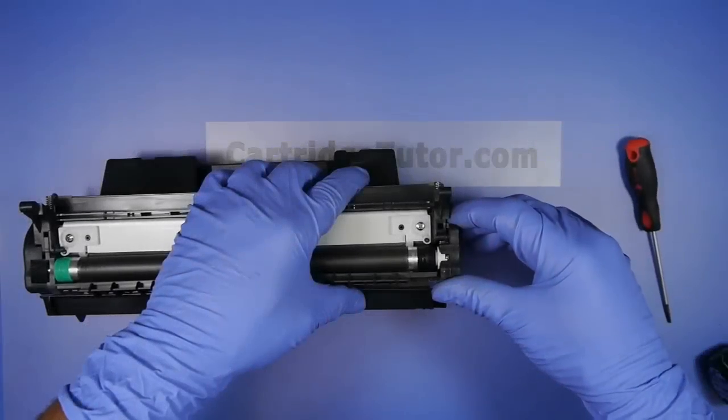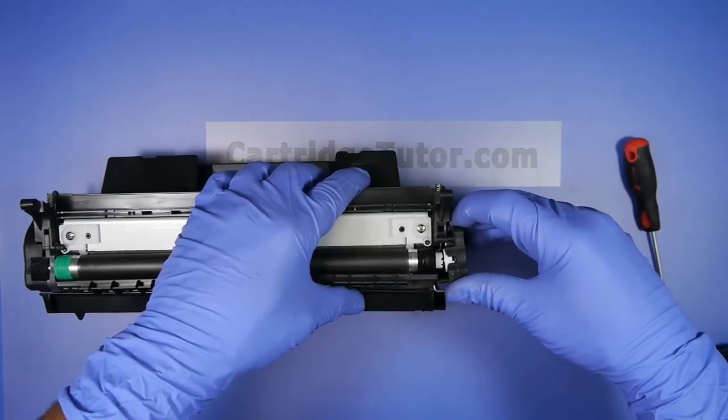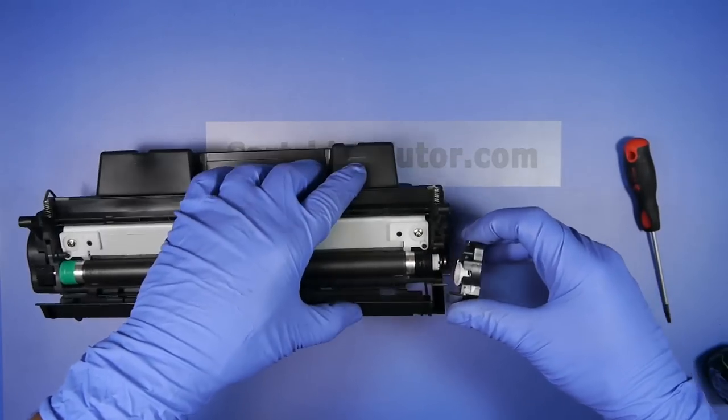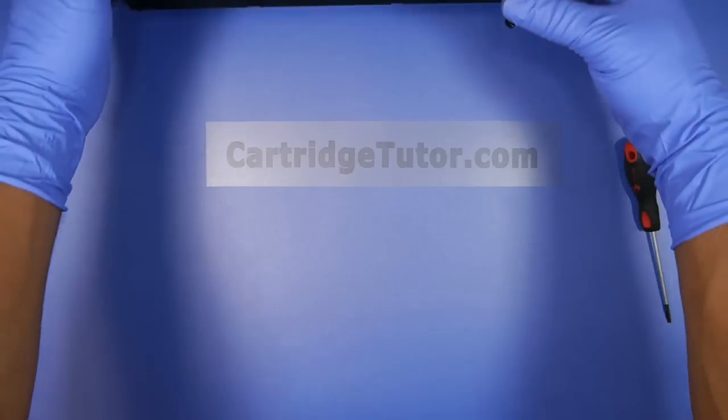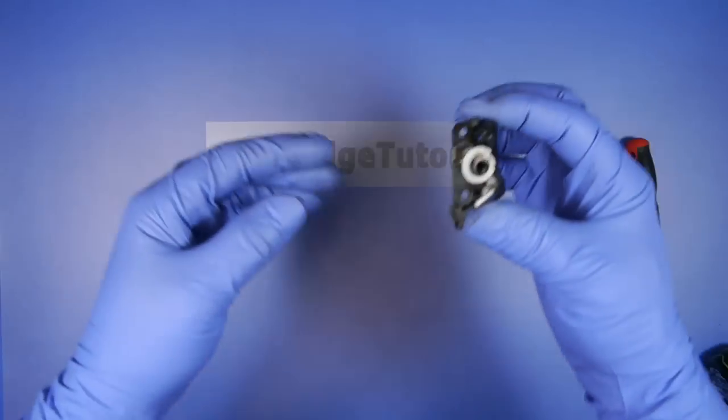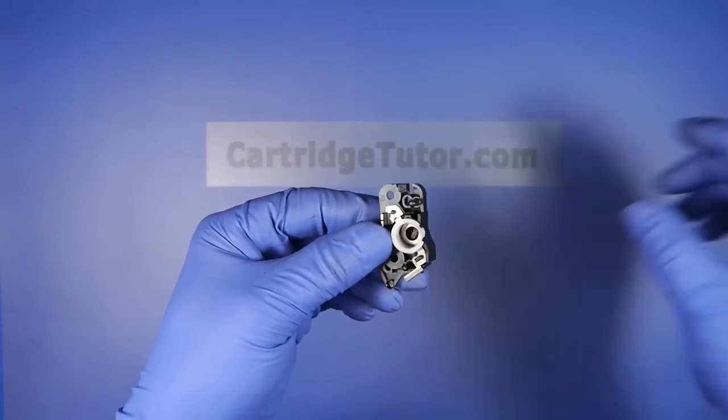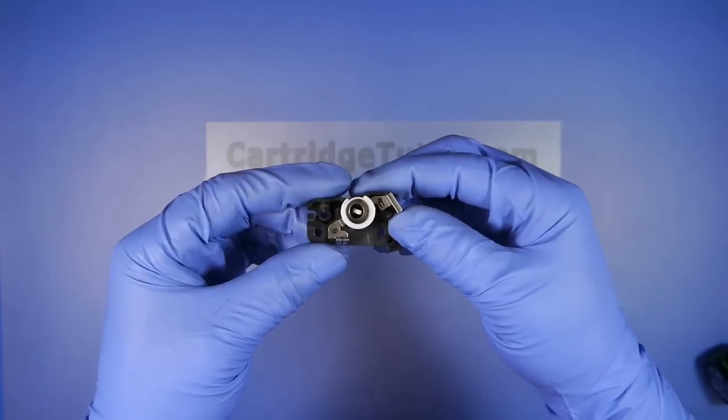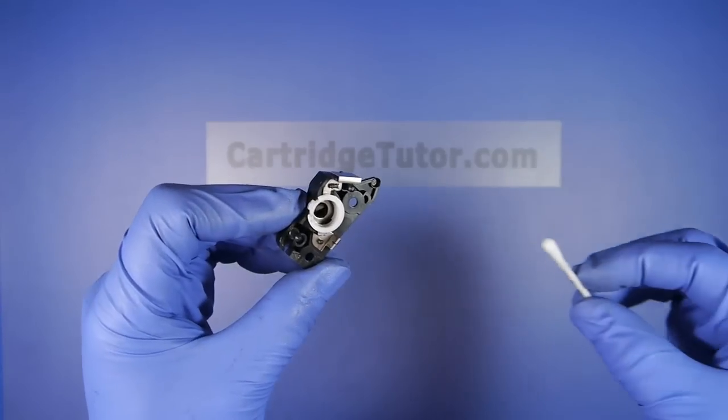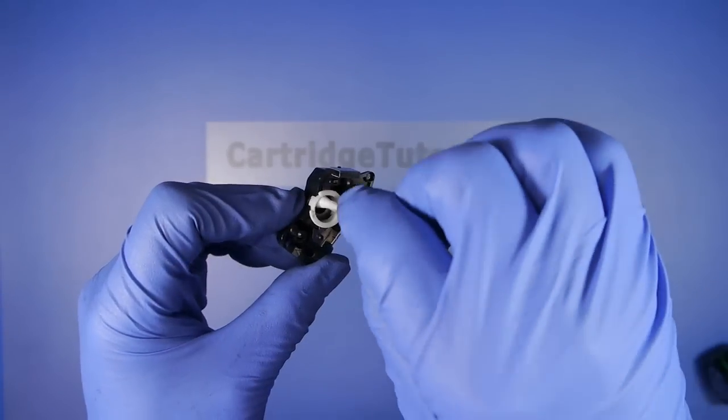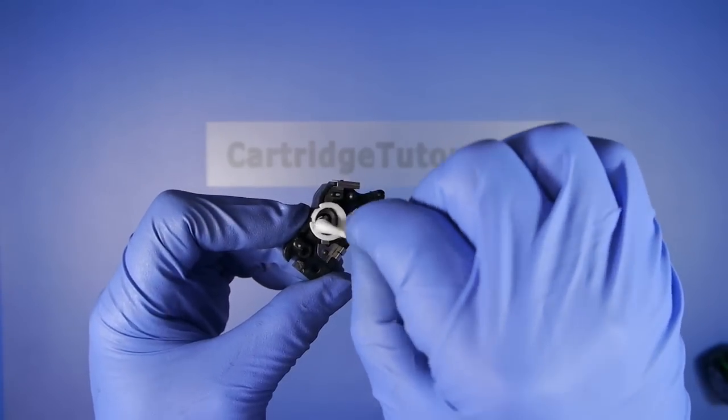Then you would gently wiggle the end plate off. The end plate looks like this. You want to use a Q-tip with alcohol and clean inside the end plate.